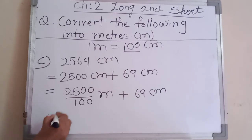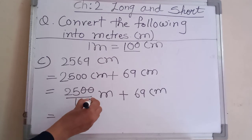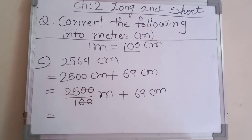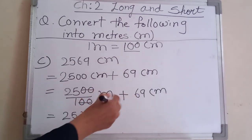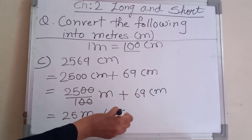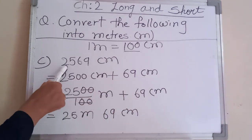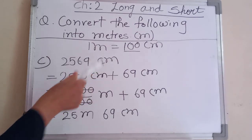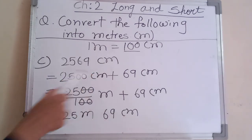Next step: in the numerator the last two digits are zero, and in the denominator there are two zeros — cut them. What remains is twenty five meter, and sixty nine centimeter stays as it is. So two thousand five hundred sixty nine centimeter converts to twenty five meter sixty nine centimeter.